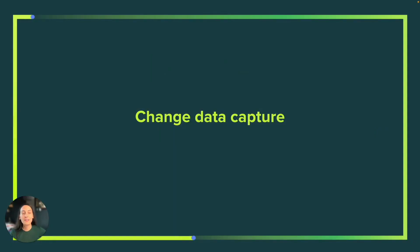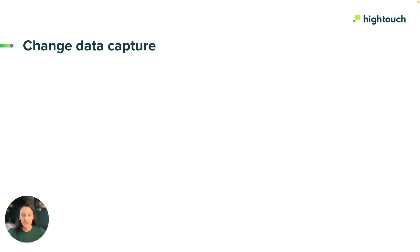Let's talk about how Hightech performs change data capture, starting with why we do it and what it is. If Hightech were to send all query results from a model at every sync, we'd likely be overwriting values that don't need updating. To prevent making excessive API requests and send only necessary updates to your destinations, Hightech uses a process called Change Data Capture.